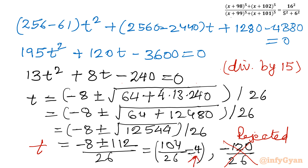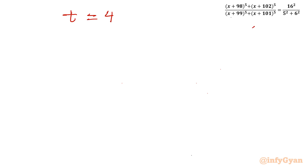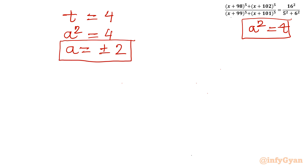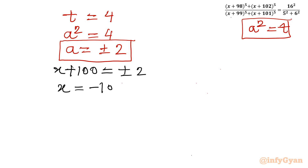Since t = a² = 4, taking the square root gives a = ±2. Substituting back, x + 100 = ±2, so x = −100 ± 2. This gives two solutions: x = −98 and x = −102.